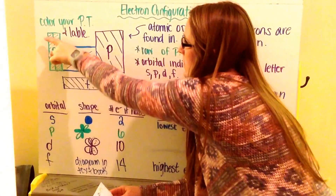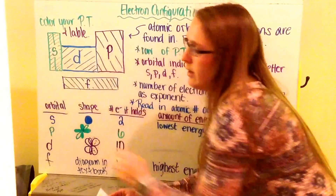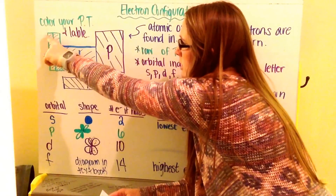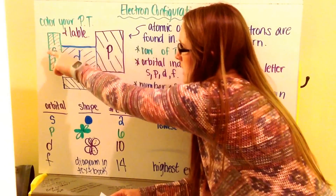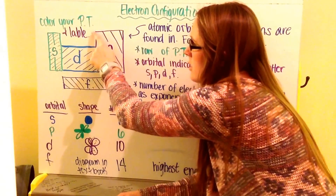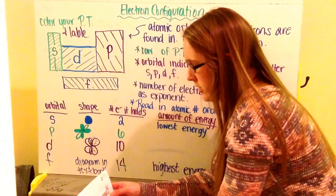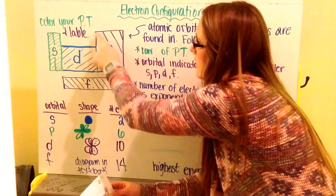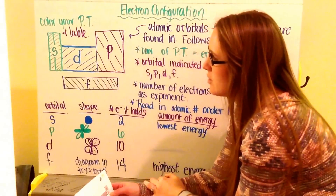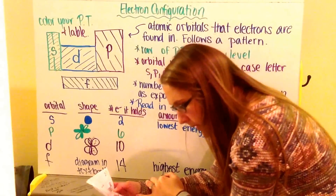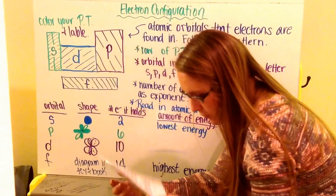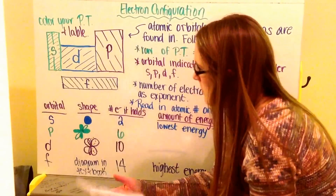We count energy levels, just like in the Bohr model, as periods going across the periodic table. For example, S starts with number 1 and goes down for each period. P starts with number 2, where boron is going down. D starts with energy level number 3, where scandium is. And F starts with energy level 4, where cerium is.